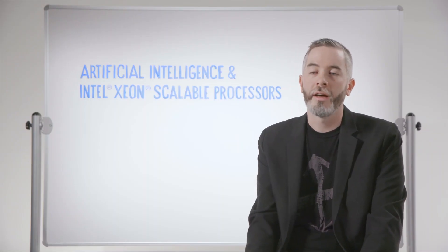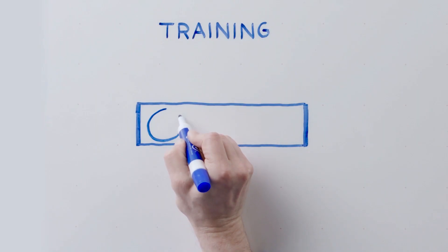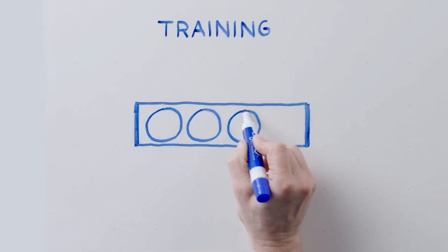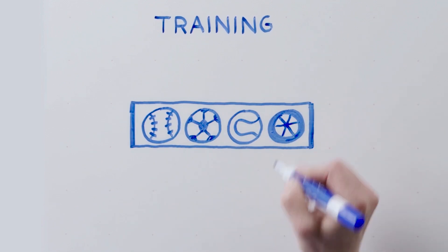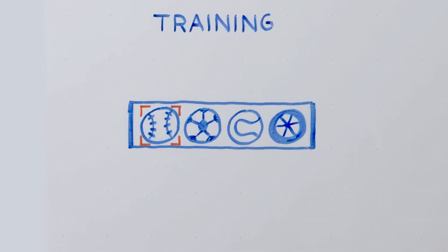For example, let's say you're trying to find images of baseballs. You would feed in a lot of different images with lots of round objects like baseballs, soccer balls, tennis balls, tires, etc., and teach the model what is a baseball and what is not.